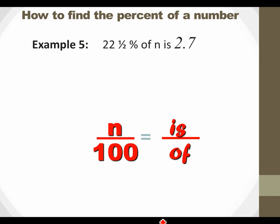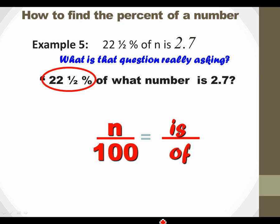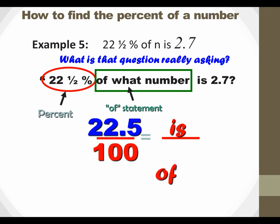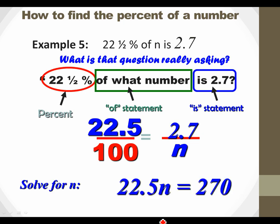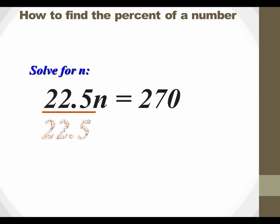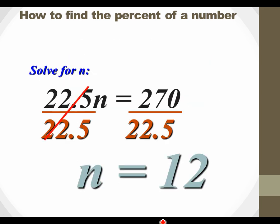Now here's one where you have a decimal or a mixed number. 22 and a half percent of N is 2.7. So we don't know what number is, but we do know what the percent is. So 22 and a half percent, I'm going to change that to a decimal. I'm just going to put 22.5 to avoid fractions within a fraction. What number? That's unknown. So we're going to put our of as N is 2.7. This kind of problem is perfectly suited for calculator. So 22.5N equals 270 divided by 22.5, and you get 12.